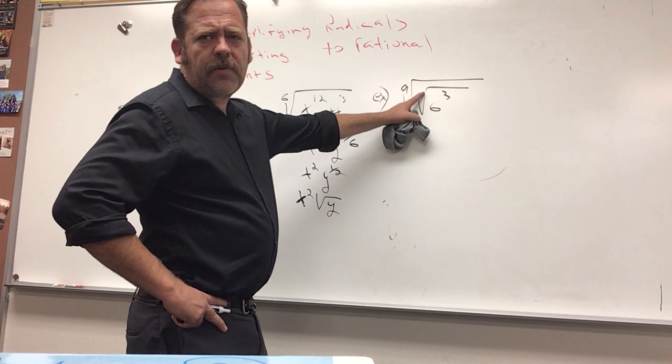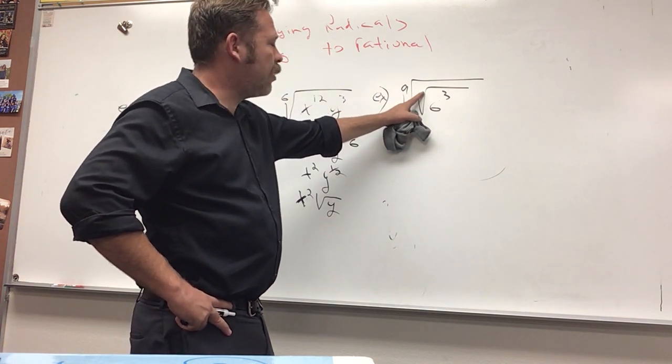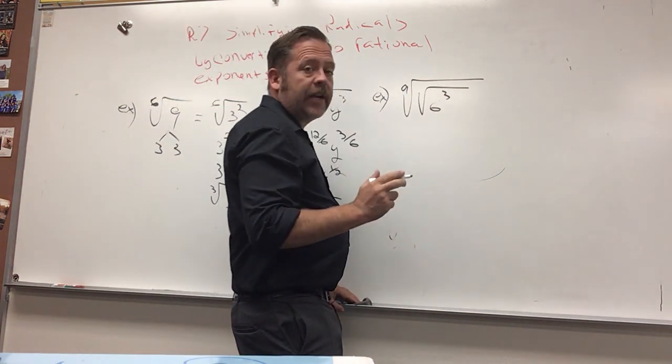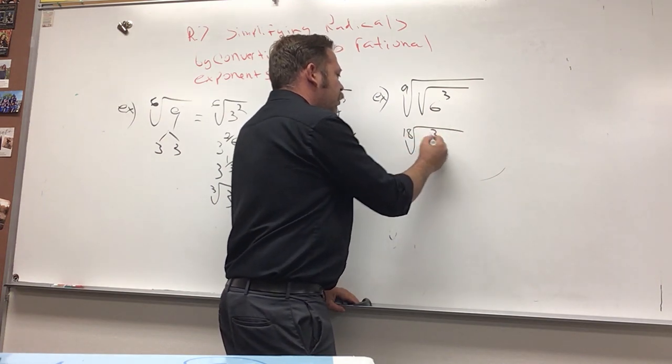Don't forget, there's not a one there for square root. It's an implied two, which goes against all the other implied numbers we've learned about earlier on in our math careers. So, another way to write this to start the simplification process is the 18th root of six cubed.